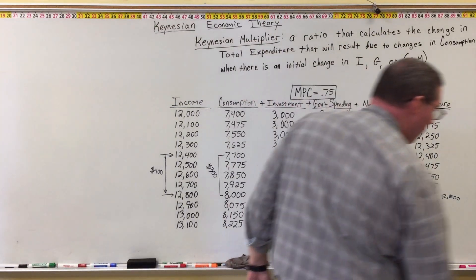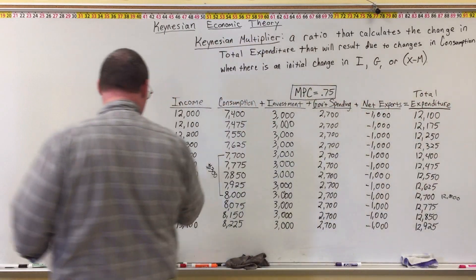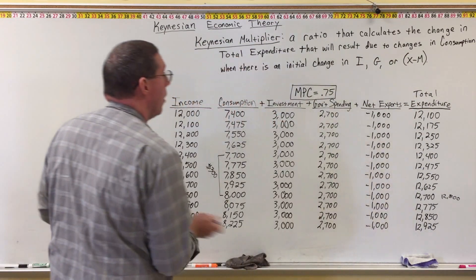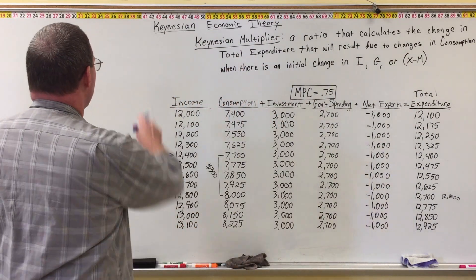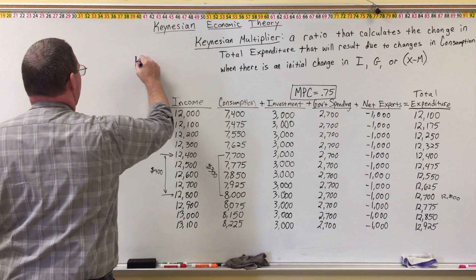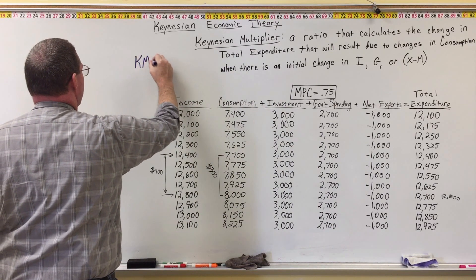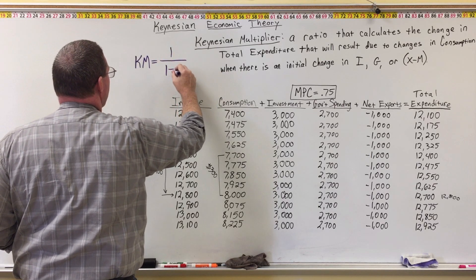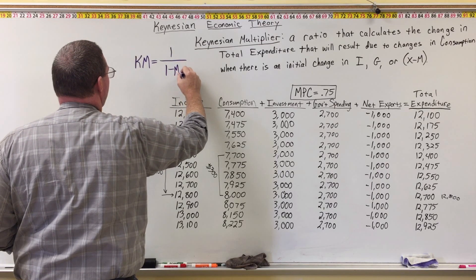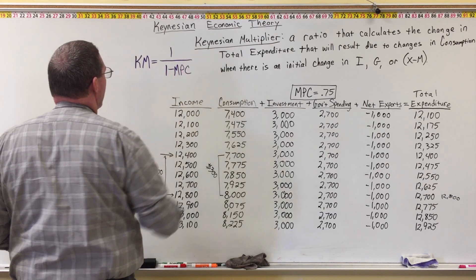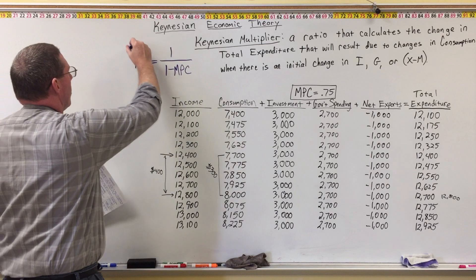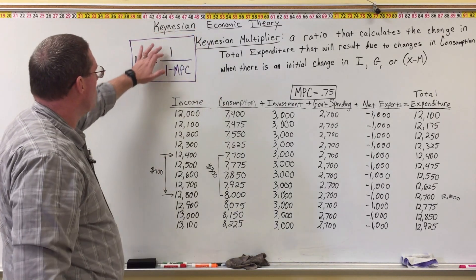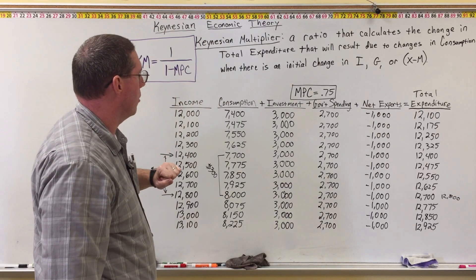I'm going to give you the calculation for the Keynesian Multiplier. The Keynesian Multiplier — Km — is equal to 1 over 1 minus the marginal propensity to consume. So the Keynesian Multiplier is 1 divided by 1 minus the marginal propensity to consume.